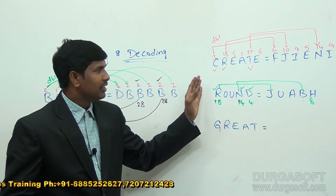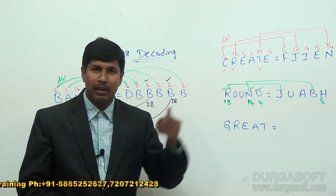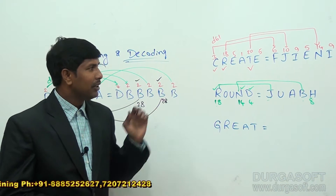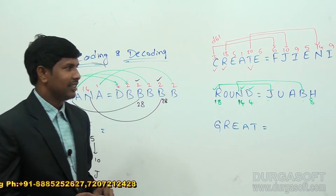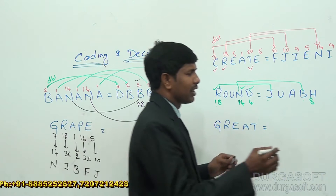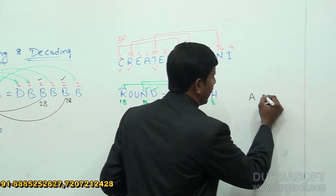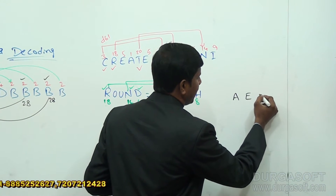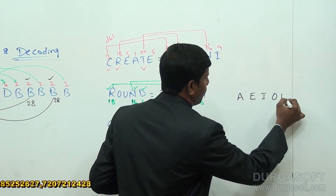For consonants, the logic was getting the double value. Now, coming to vowels, let's see what the logic is. The vowels are A, E, I, O, U.